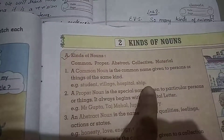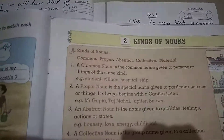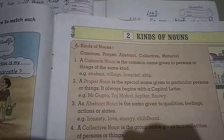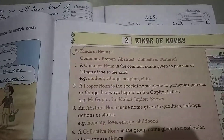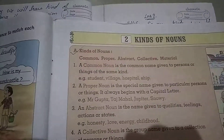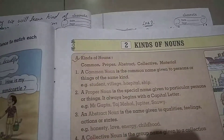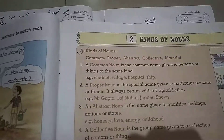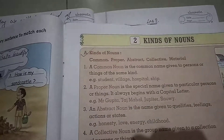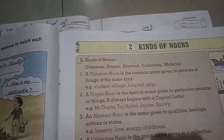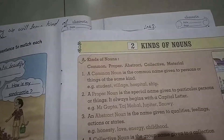A Common Noun is a common name given to a person or a thing of the same kind. For example, you are students. There are many students in the class. We don't specify the name of that child. We call them fifth standard students, sixth standard students. Common Noun is the common name — we call them 'student'.